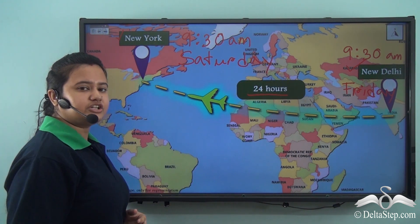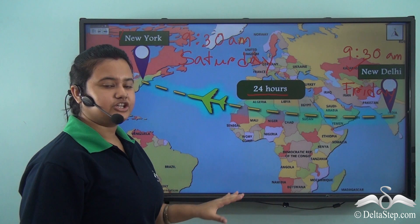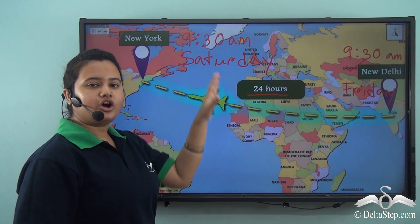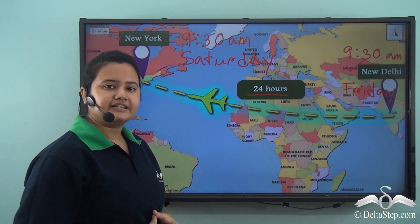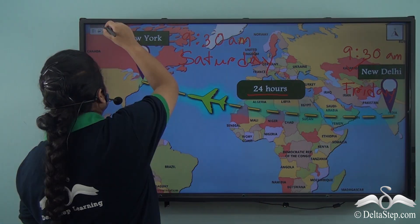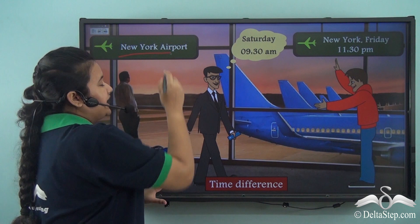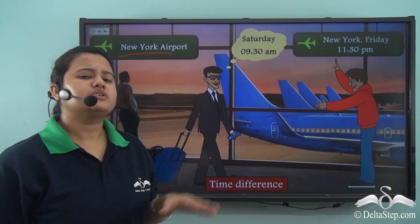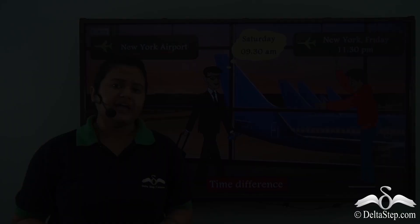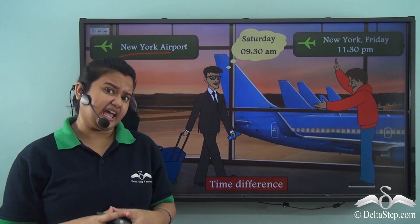According to Samir's calculation, he must reach New York on Saturday 9.30 am. But when he reached New York Airport, it was dark. Samir was confused. It was night at 9.30 am.